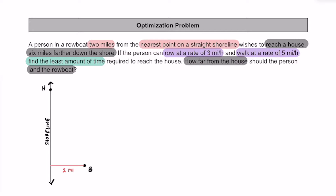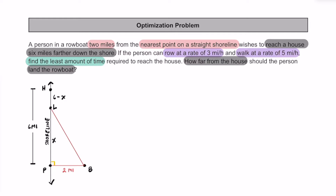Going ahead and labeling a couple more things on this diagram. We know the distance from this point over to this point is going to be six miles. Don't forget we know that this is a right angle. While we don't know exactly where this boat's going to be landing, we just need to come up with a hypothetical spot for now — let's say this boat is going to land right over here. I'm going to call this L for where it lands. Let's call this distance in this triangle X. So this distance from where it lands all the way to the house — if this whole thing is six from H all the way to this perpendicular point — then this distance from here to here must be equal to six minus X. I'm going to call this point over here point P.